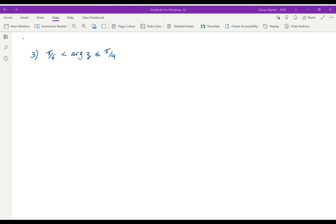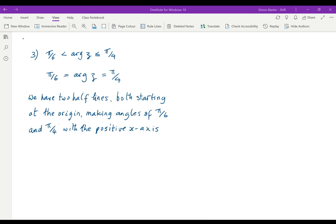Once again we want to start on the equals and see what that looks like. If we look at the equals we have arg z equals pi by 6. That is a half line starting at the origin going up at an angle of pi by 6. Arg z is pi by 4 is a half line starting at the origin going up at pi by 4.